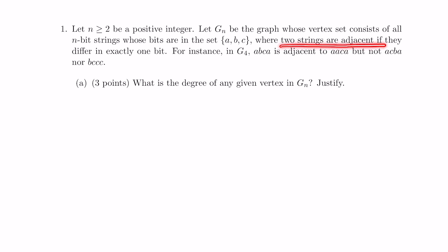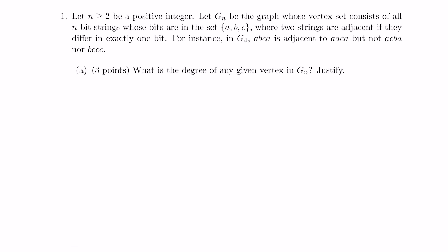Two strings are adjacent if they differ exactly in one bit. So for example, if you look at A, B, C, A, and A, A, C, A, they differ exactly in the second bit. So they're going to be adjacent in this graph, whereas these two are not adjacent at all because they differ in many positions. So the question is to determine the degree of every vertex and then to determine the size of the edge set.